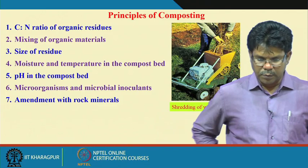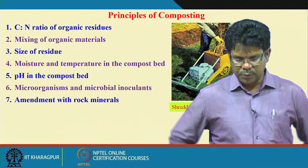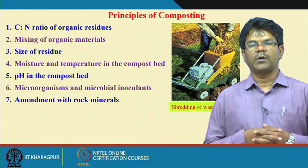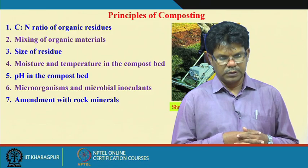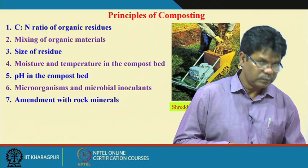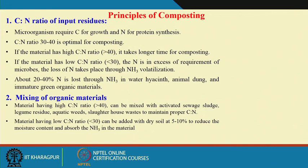Finally, amendment with rock minerals is also one way of enriching the compost with natural minerals. Depending on the type of compost being made, different rock minerals can be added so the compost is enriched with specific elements. Coming to the first principle, the preferred C:N ratio is 30 to 40:1. C:N means the microorganism requires carbon for growth and nitrogen for protein synthesis, so the C:N ratio of the waste materials should be 30 to 40:1 — that is optimal for composting.